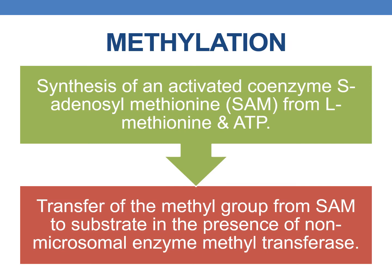Methylation basically occurs in two steps. The first step is the synthesis of an activated coenzyme S-adenosylmethionine (SAM) from L-methionine and ADP. The second step is the transfer of a methyl group from S-adenosylmethionine to the substrate in the presence of the non-microsomal enzyme methyltransferase.